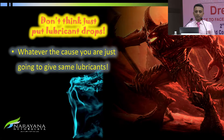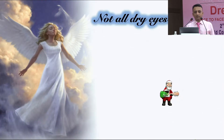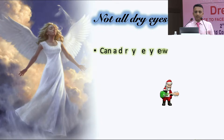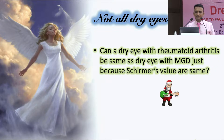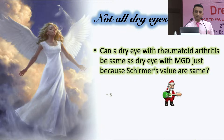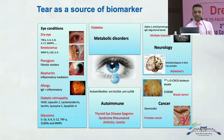When we talk about dry eye, when we classify dry eye, when we treat dry eye, do we actually look at the root cause? Well, we do not look at the root cause. In fact, whatever the dry eye is, we still put everything in the same bracket — dry eyes. Can a dry eye with rheumatoid arthritis and a melting eye be the same as MGD just because their Schirmer's values and TBUT values are equal? Of course not. We know they are totally different disease conditions, and hence classifying and treating them under the same banner would not be the best approach.